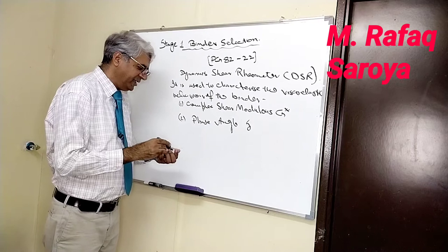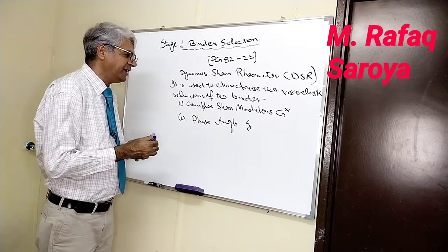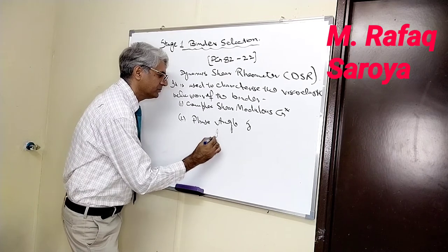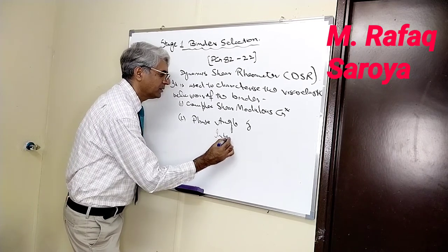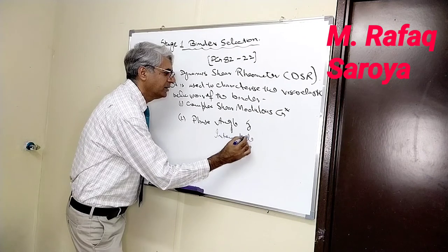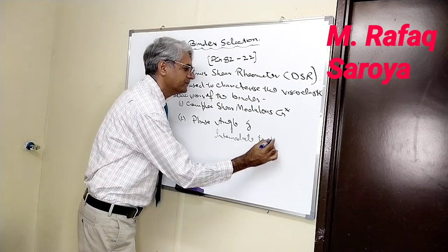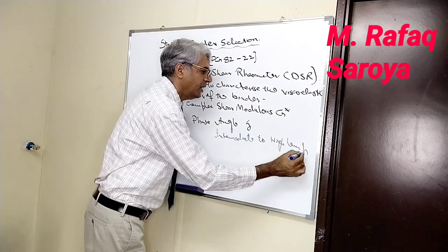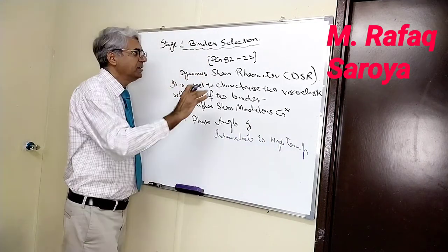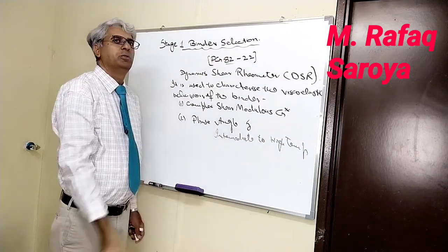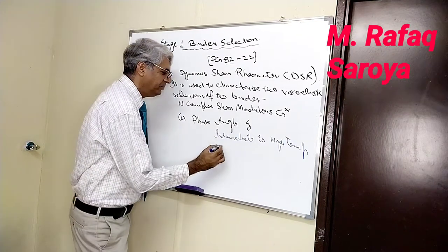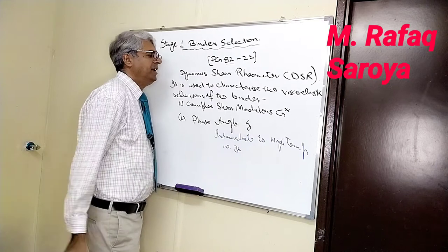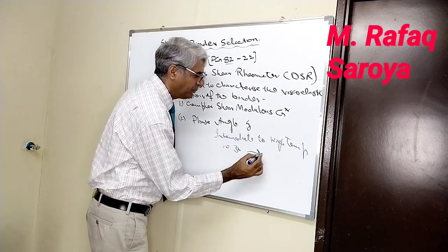What can be the range of this temperature? Intermediate temperature and high temperature. Intermediate to high temperature, or I can say that this is greater than 82, so I can start from 30 and I can reach up to 82.